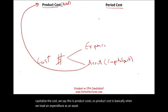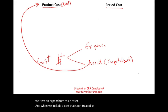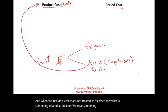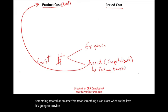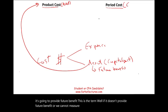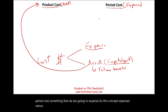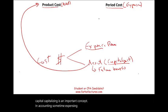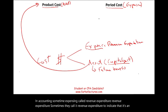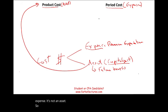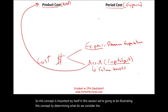When we incur a cost that's not treated as an asset — we treat something as an asset when we believe it's going to provide future benefit. If it doesn't provide future benefit, or we cannot measure that future benefit, we expense it. Period cost is something that we are going to expense. Expensing is sometimes called revenue expenditure to indicate that it's an expense, not an asset. In this session, we'll illustrate this concept by determining what we consider a product cost and what we consider a period cost.